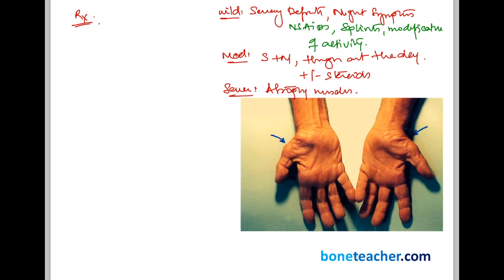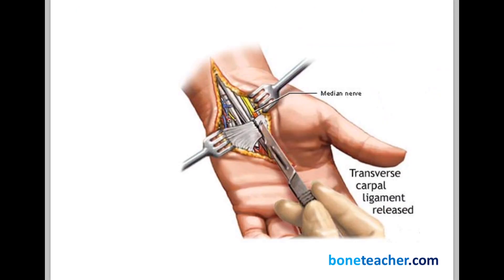If the patient presents very late in the disease spectrum with severe symptoms — meaning atrophy of muscles — the only option is surgical release. This surgical release involves cutting the transverse carpal ligament, which releases the pressure inside the carpal tunnel and over the median nerve, allowing the median nerve to recover.